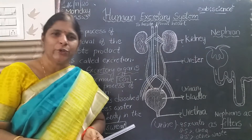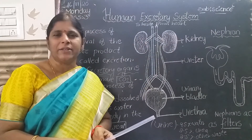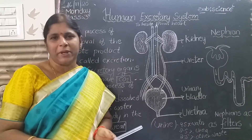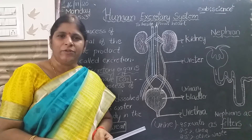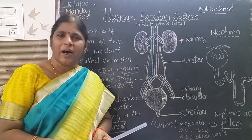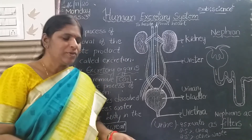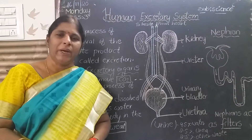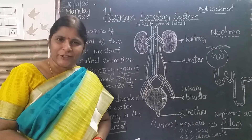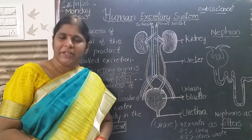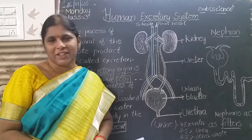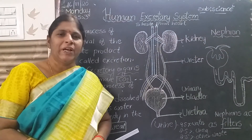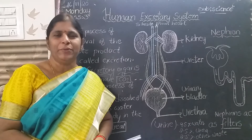Today I am going to explain one of the important systems, that is the excretory system. It is one of the most important organ systems of the body that performs the vital function of filtering of blood and removing excessive and unnecessary materials from our body. What is the main function of the excretory system? Filtering the blood and removing waste material from our body.